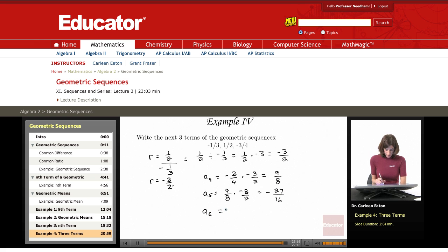The sixth term is going to be negative 27-sixteenths times negative three-halves. A negative and a negative is going to give me a positive. And 27 times three is actually 81.